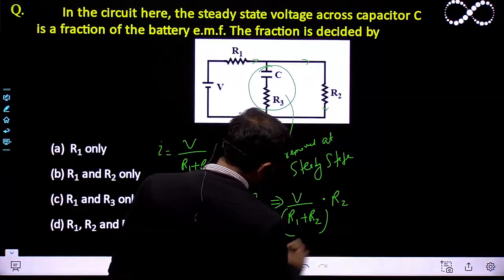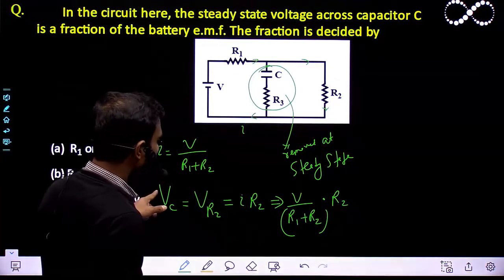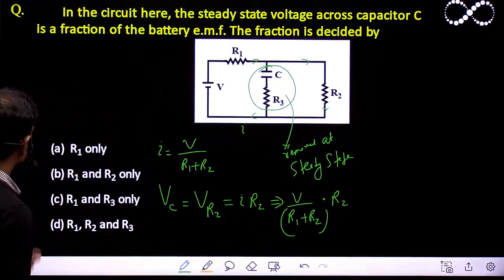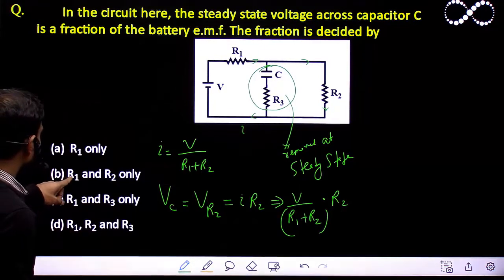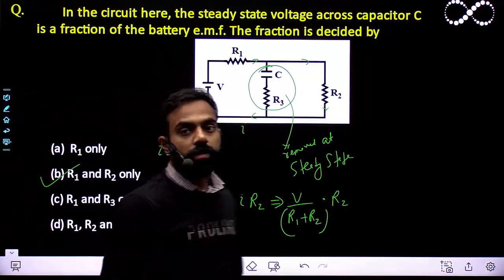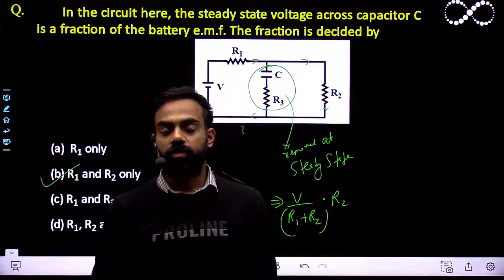I can say the potential difference across the capacitor will depend on the resistances R1 and R2. Let's see which option: R1 only - this is wrong. R1 and R2 only - this is correct. Option B is correct. Students, I hope you understood this question.